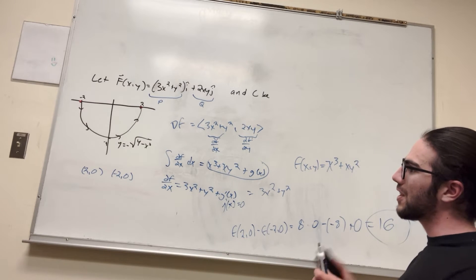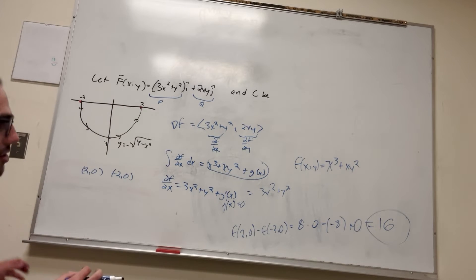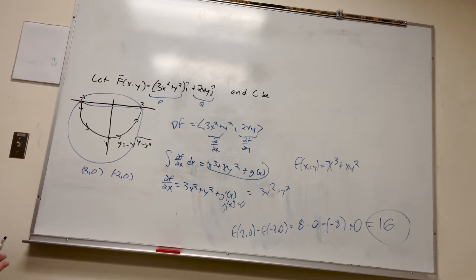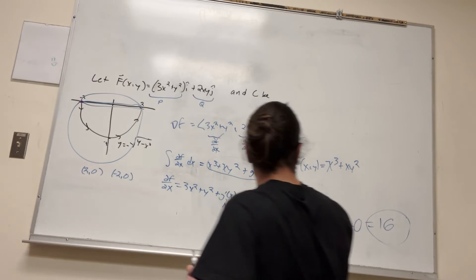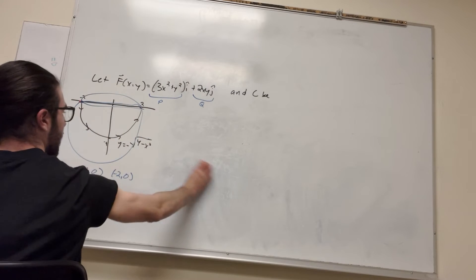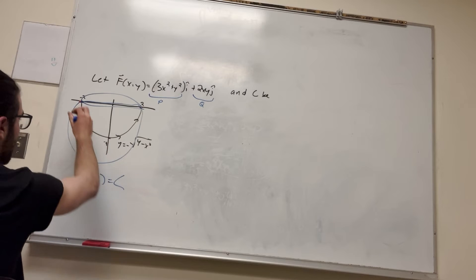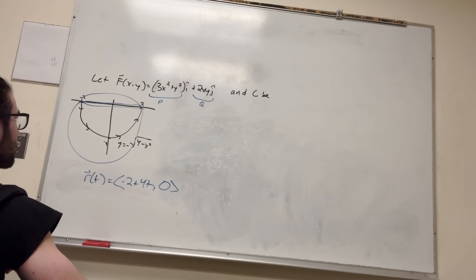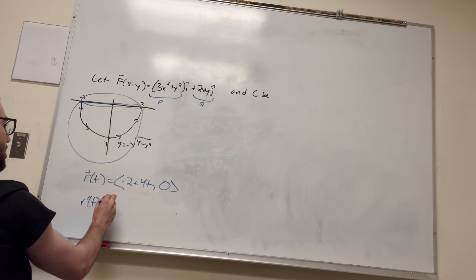Now I'm going to show you something cool. When your field is conservative, it doesn't matter what path you take from A to B — you can take this curve, this curve, or this curve, and you'll get the exact same work. So let's go easy and go straight across. Our r of t is going to be the starting point negative 2, plus 4t across in x, and y doesn't change at all, so it's zero. So r(t) equals (negative 2 + 4t, 0). Taking the derivative, r prime of t equals (4, 0), and t goes from 0 to 1.